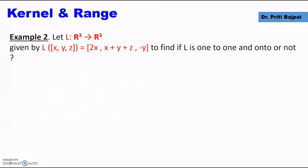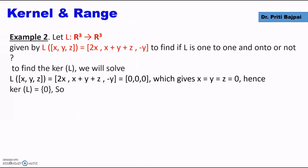We'll do a few examples. If L is a linear transformation from R³ to R³ given by L(x, y, z) = (2x, x + y + z, -y), we check whether it is one-to-one and onto. To find the kernel L, we equate L(x, y, z) = (0, 0, 0). Solving, we see x, y, and z are all 0. So the kernel has only the zero element of R³, and the dimension of kernel is 0. Hence L is one-to-one.